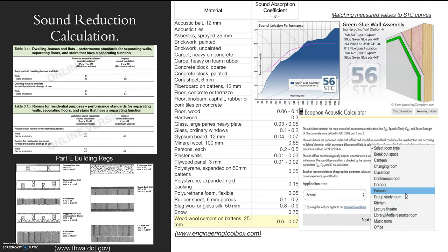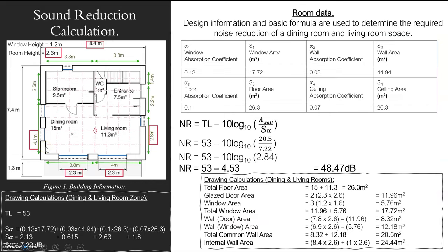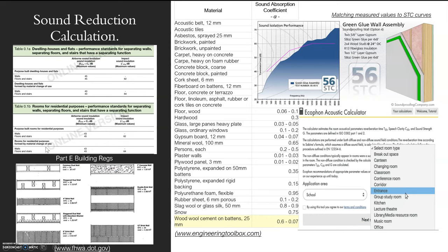Please feel free to use this. I've just got a sheet here showing you information. For party wall building regulations, you need to have insulation of 45 dB — that's your minimum. Bear in mind ours was 48, so we're all right.